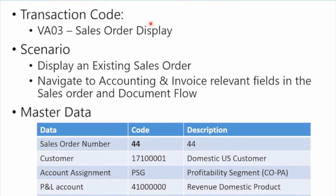In this lesson we're going to look at a sales order and how a sales order relates to an invoice, to get some orientation of these logistics documents. When you create invoices related to sales orders, you'll have an idea where the data is coming from and how the accounting decisions are being made. The transaction code is VA03 — Display Sales Order — and we're going to navigate around some of the accounting and invoice-relevant fields and the document flow to give you some perspective.